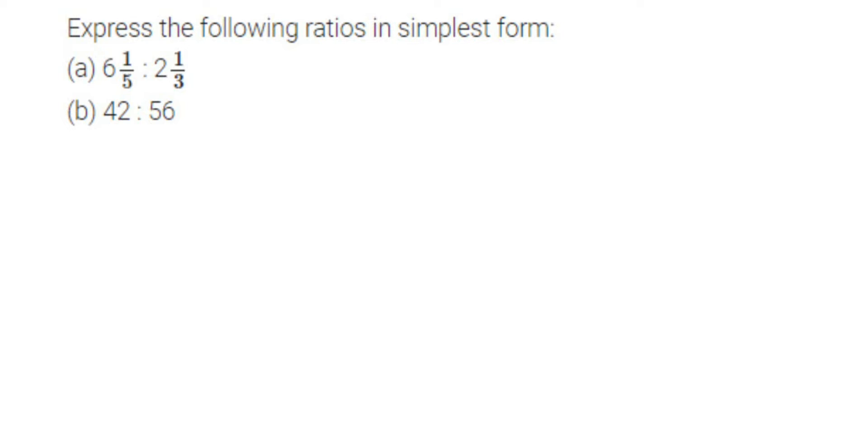Hey everyone, here we have a question on ratios. The question is: express the following ratios in simplest form. Simplest form means we have to reduce a given ratio by canceling the numbers or dividing them. The first one is 6⅕ : 2⅓. Now let's start the first question.